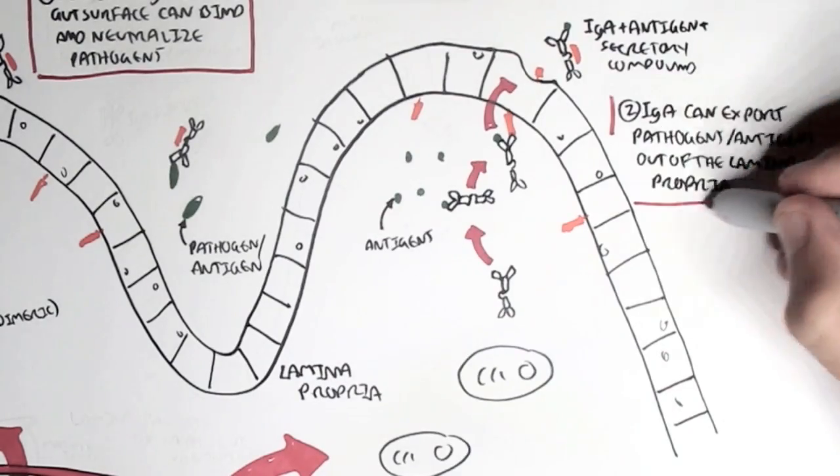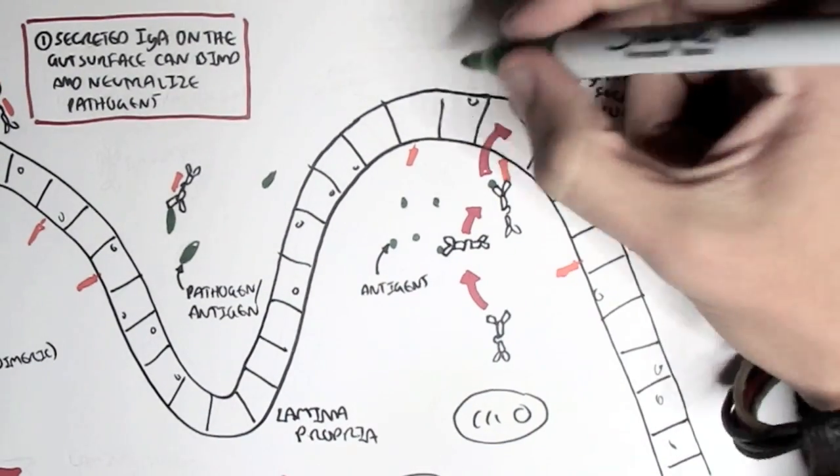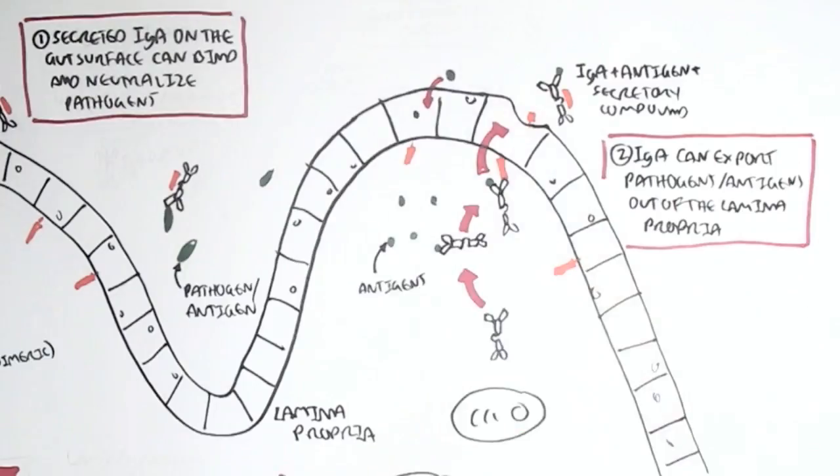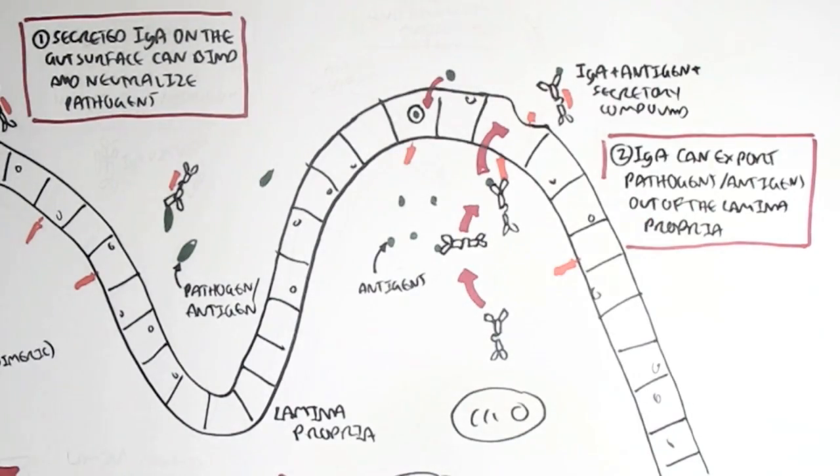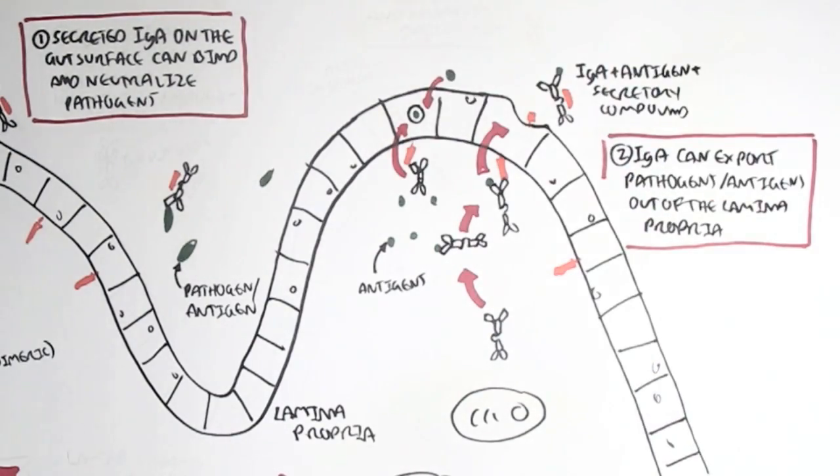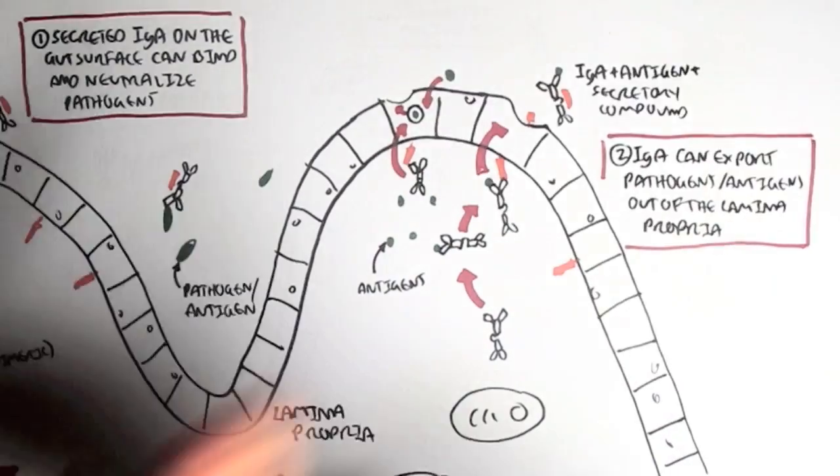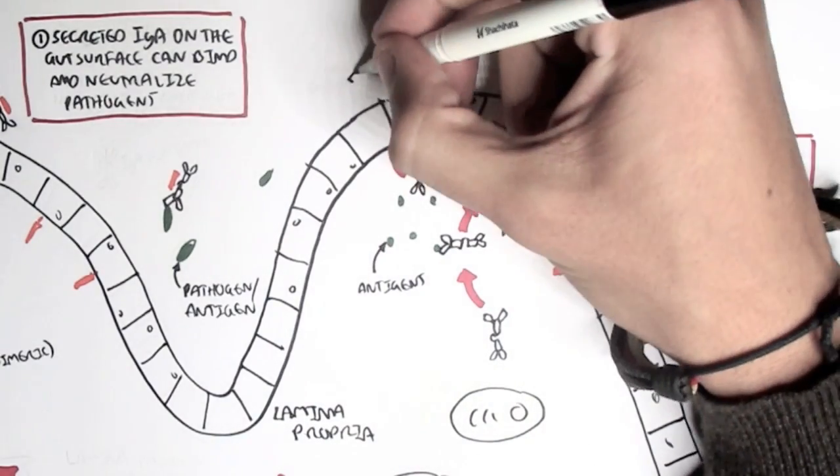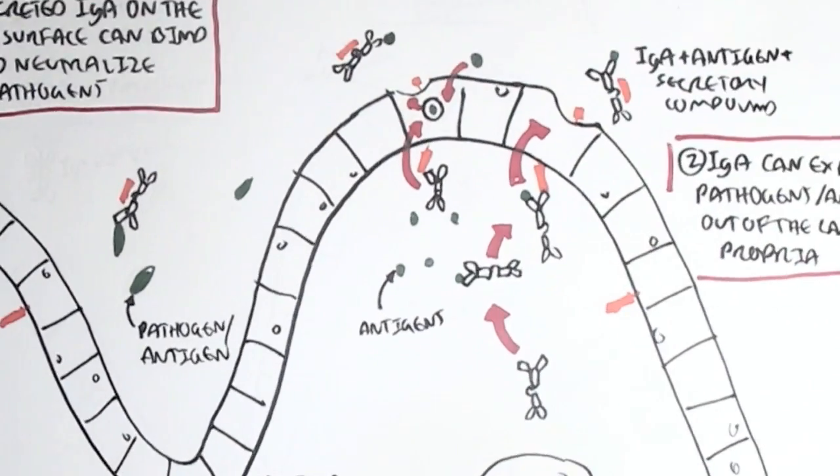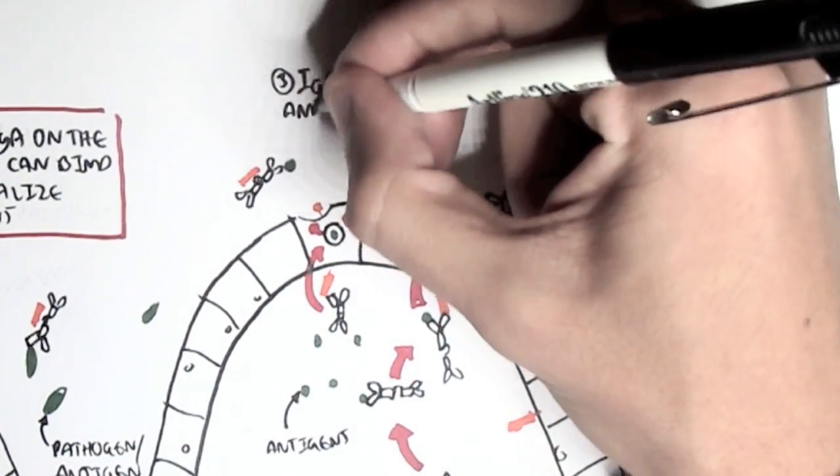And the final thing, or one of the other main things IgA antibodies can do, is that if an antigen has infiltrated a cell, the IgA antibody can bind the PIGR receptor of the cell that has been infiltrated, and essentially bind with the antigen within the cell and then transport it out. So number three, the IgA can bind and neutralize an antigen within the cell.